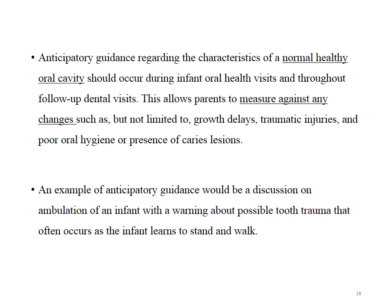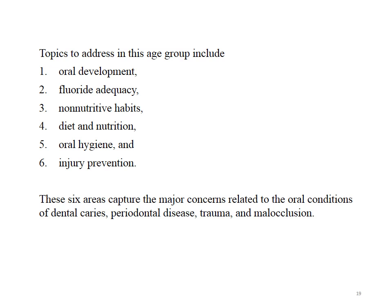An example of anticipatory guidance is a discussion on ambulation of an infant with a warning about possible tooth trauma that often occurs when a child learns to stand and walk. Anticipatory guidance has defined protocols for each age group starting from 6–12 months through adolescence. Topics addressed include oral development, fluoride adequacy, non-nutritive habits, diet and nutrition, oral hygiene, and injury prevention — six areas capturing the major concerns related to dental caries, periodontal disease, trauma, and malocclusion.